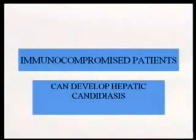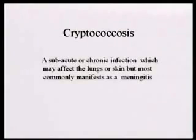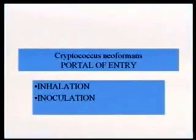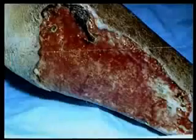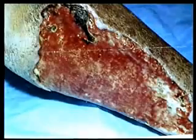Hepatic candidiasis — unheard of before. Looking at the bottom of a reflected liver, you can see all those abscesses — those are Candida albicans. That's an unusual organ being infected. Cryptococcus is associated with pigeons and mostly presents as meningitis. Now we also see pulmonary disease and skin disease. The source is pigeon droppings and chicken droppings — inhalation and inoculation. That's cryptococcus in a compromised patient — we didn't used to see that kind of thing.